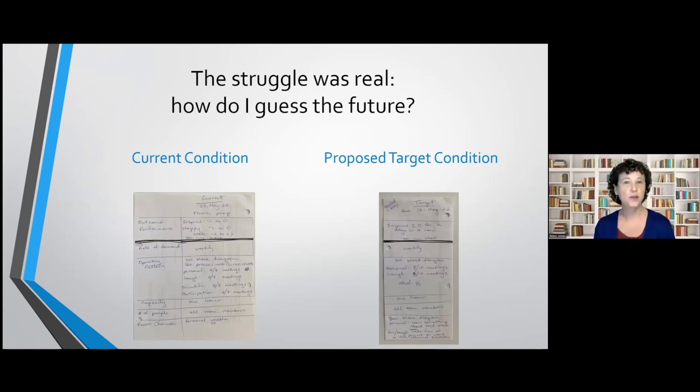My next step, Andrea asked me to create the target condition. And this was really hard for me. I struggled because how do I know what the future is going to look like? How do I know which of these metrics I'm currently looking at are relevant? How do I know which ones are going to impact the target condition? It made no sense to me. I really was just lost.